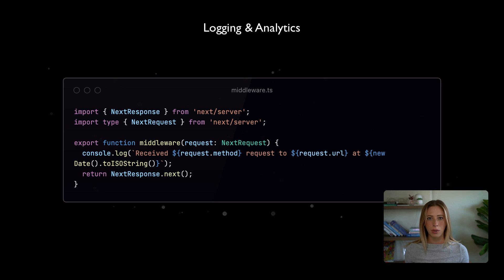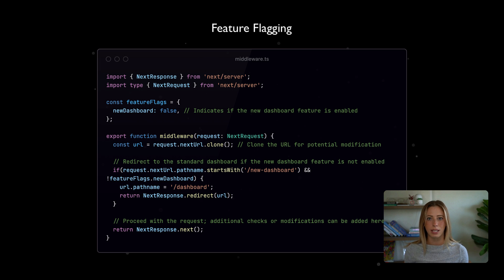Middleware is also ideal for logging and analytics — it captures data right in the request path, offering real-time insights with little extra load. And lastly, middleware is perfect for managing feature flags because it can turn features on or off early, before they reach the back-end logic or front-end rendering. In each of these scenarios, middleware is often more efficient, secure, and scalable than other approaches.